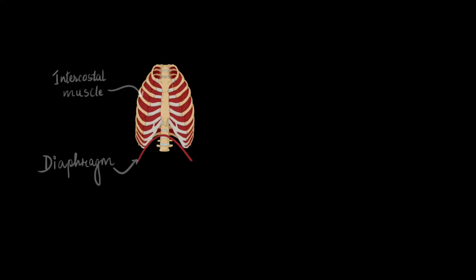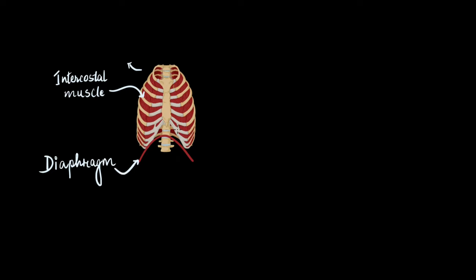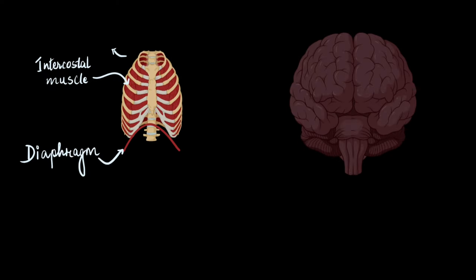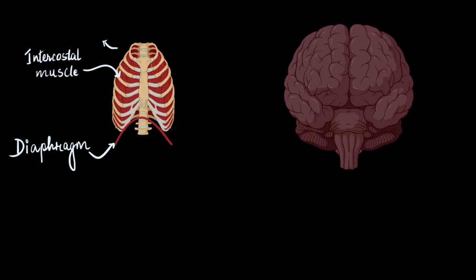Our lungs are very carefully placed in the rib cage. They are attached to the muscles of the ribs called the intercostal muscles, and we have a very important muscle called the diaphragm which is underneath the rib cage. These two muscles play a vital role in breathing, as we have learned in the mechanism of breathing. These muscles contract and relax, and that is how we inhale and exhale. But just like any muscle of our body, these muscles cannot contract without signals from the brain.